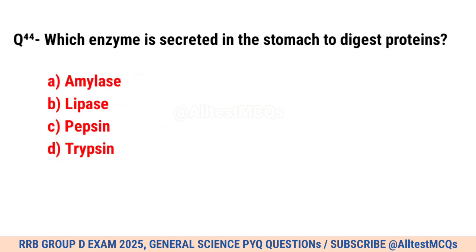Question No. 44. Which enzyme is secreted in the stomach to digest protein? Correct option is C. Pepsin.